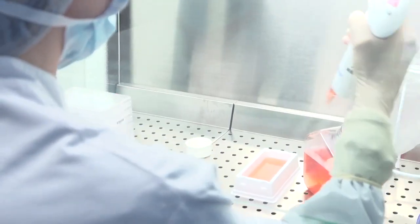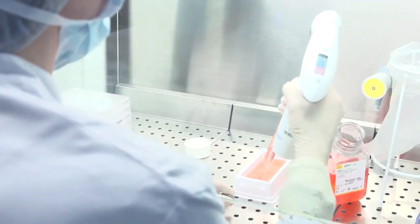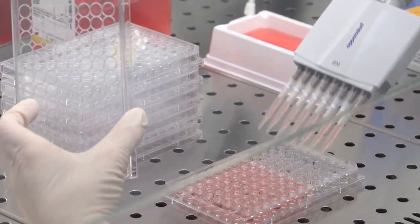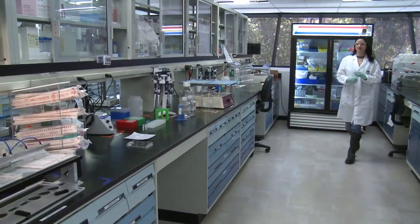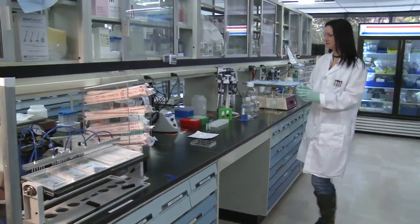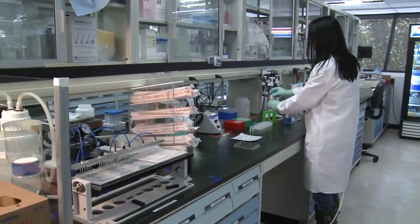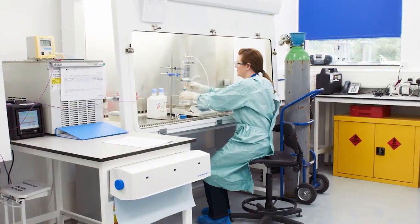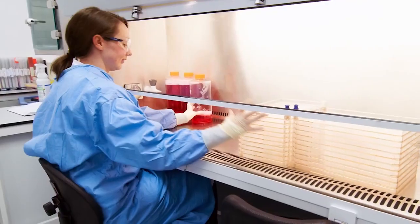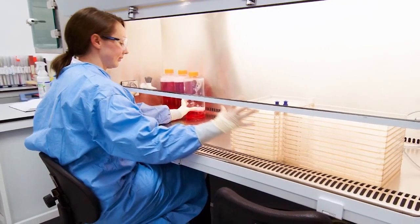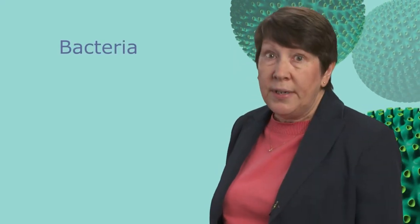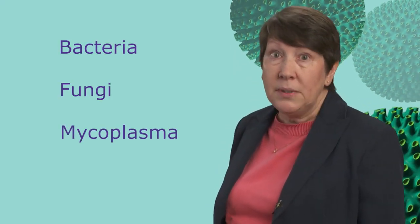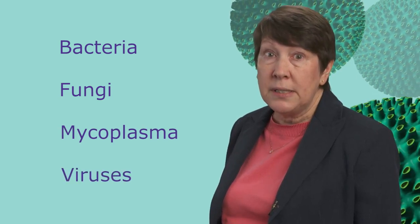Cell bank testing involves verifying the identity and purity of the banks. Identity testing requires that the species of the cell line be confirmed. For purity testing, the cell bank must be confirmed free of adventitious microorganisms, such as bacteria, fungi, and mycoplasma, as well as viruses.